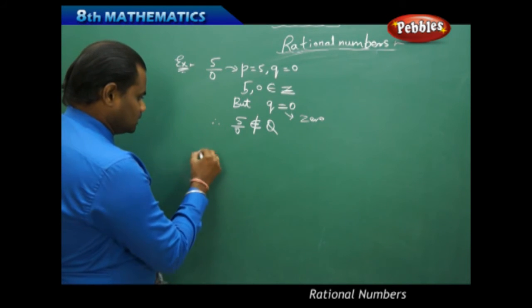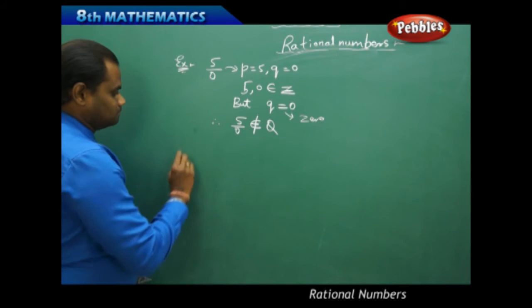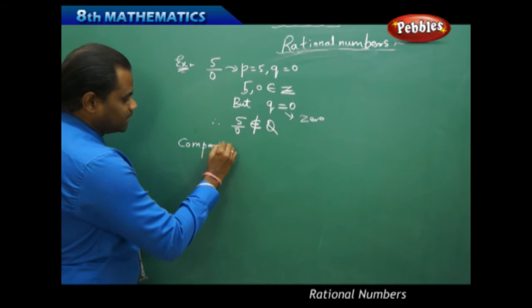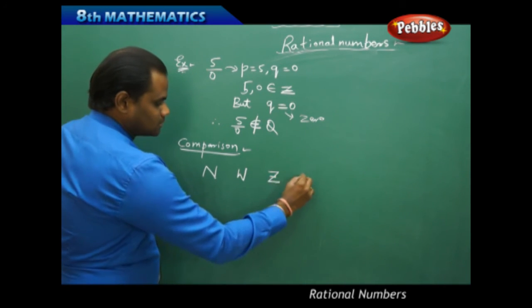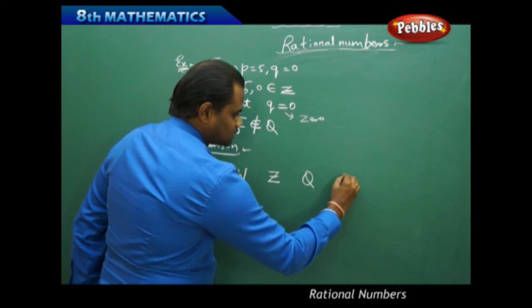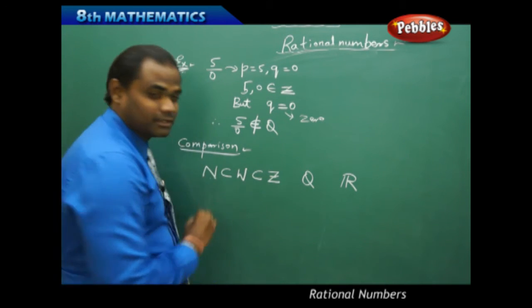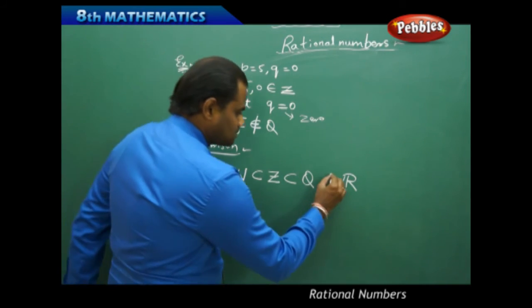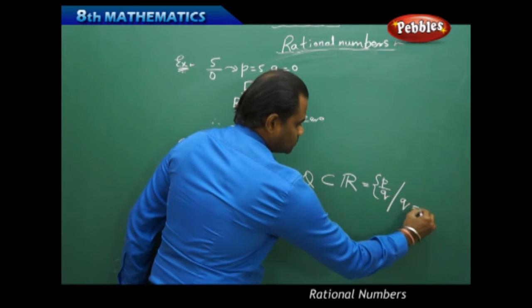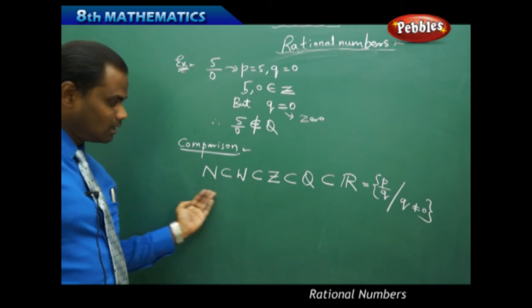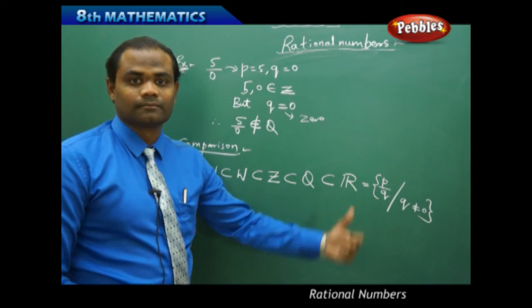Now let's compare the sets: natural numbers, whole numbers, integers, rational numbers, and real numbers. All natural numbers are a subset of whole numbers; all whole numbers are a subset of integers; all integers are a subset of rational numbers; and all rational numbers are a subset of real numbers. Real numbers include all numbers in the form P by Q such that Q is not equal to 0. So: N ⊆ W ⊆ Z ⊆ Q ⊆ R, where R stands for real numbers.